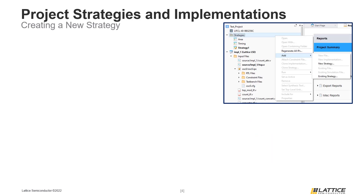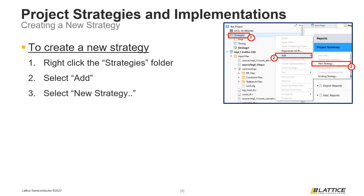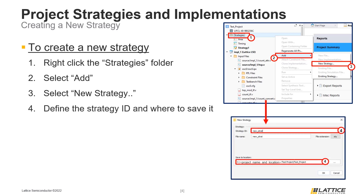Users can also create new strategies from scratch. To begin creating a new strategy, right-click the strategies folder in the file list tab. From the drop-down that appears, select Add and then New Strategy. This will open the new strategy creation window. In this window, define the name for the new strategy and where it should be saved, then click OK to finish creating it.